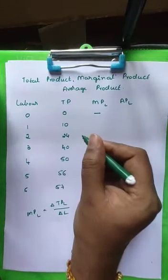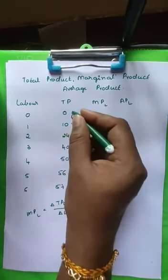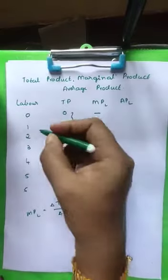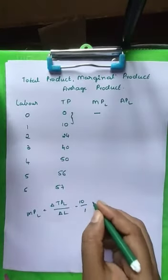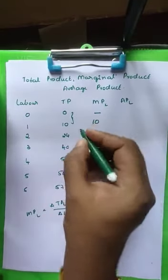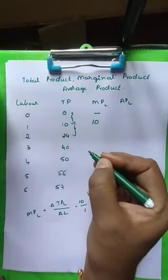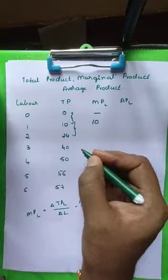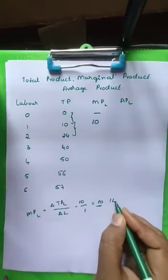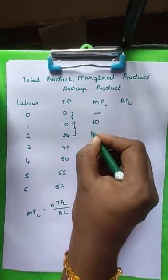Now we do the difference between these values. For labor going from 0 to 1: 10 minus 0 is 10, divided by 1 minus 0 which is 1, so 10 divided by 1 equals 10 — the marginal product is 10. Next, 24 minus 10 is 14, divided by 2 minus 1 which is 1, so 14 divided by 1 equals 14 — the marginal product is 14.